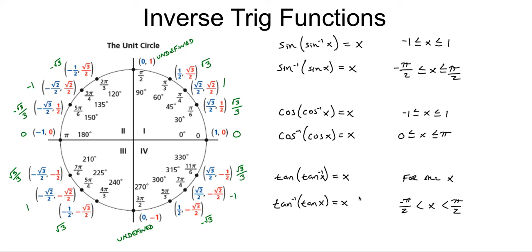The tangent is slightly different. You can take the inverse tangent of any number. The composition of the inverse tangent of the tangent of x equals x as long as x is between negative pi over 2 and pi over 2, non-inclusive. The tangent is only undefined at pi over 2 or 3 pi over 2.